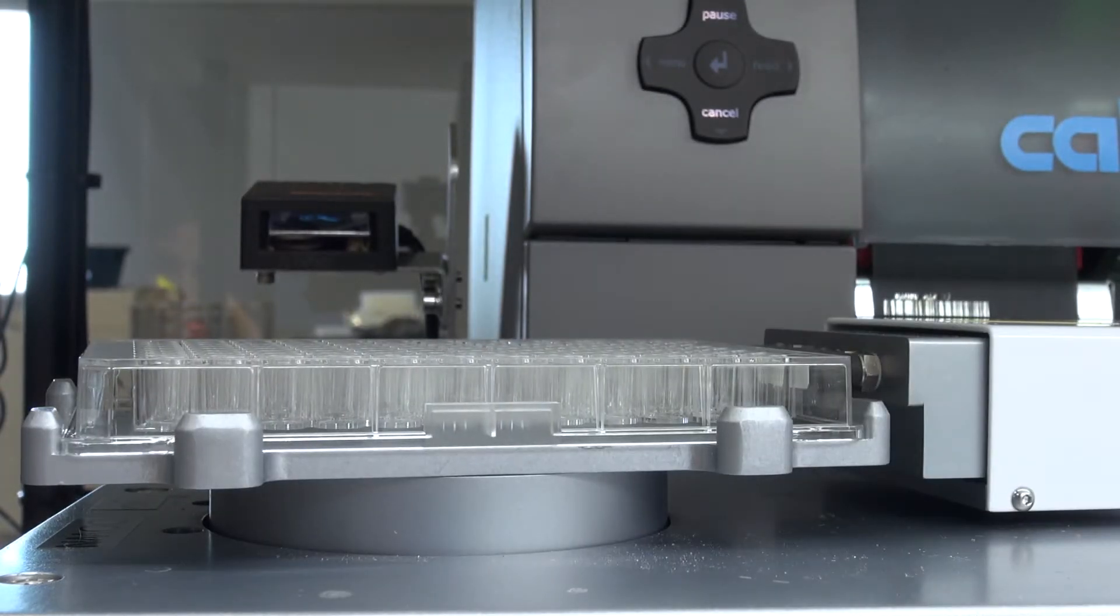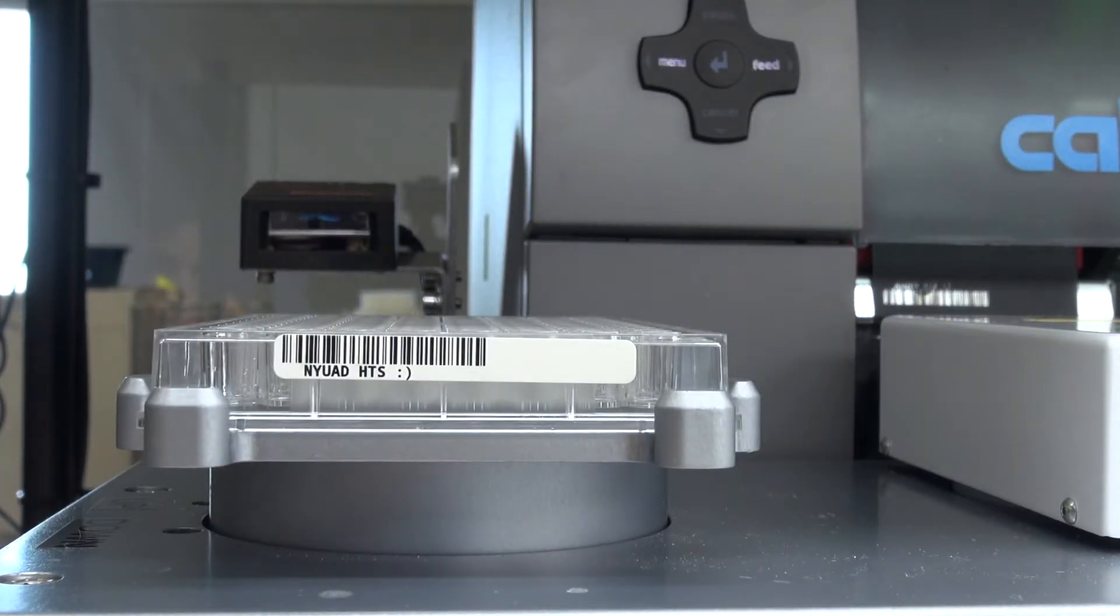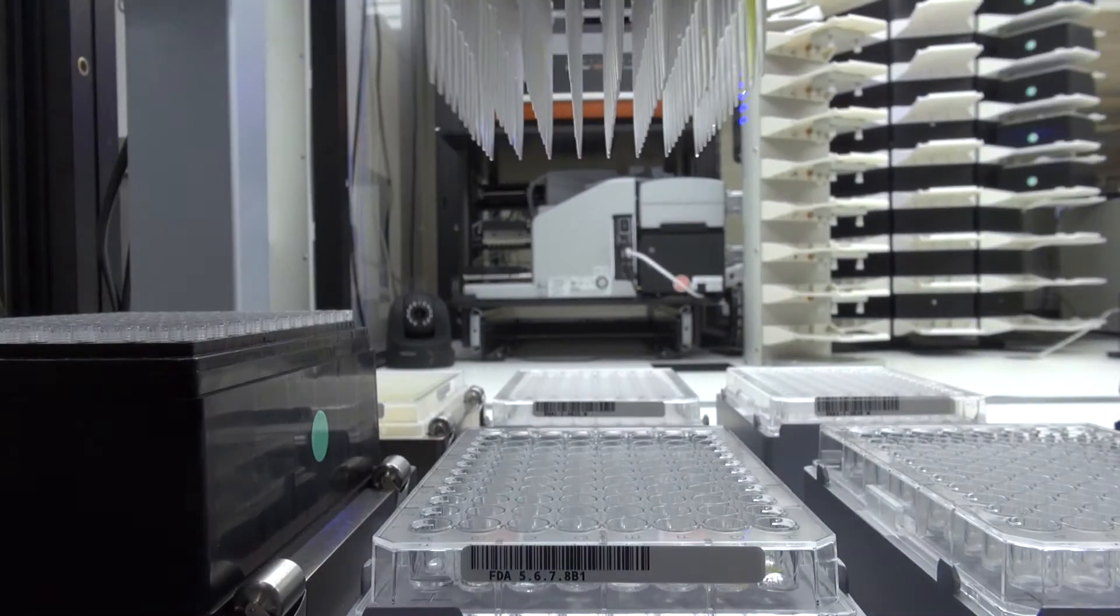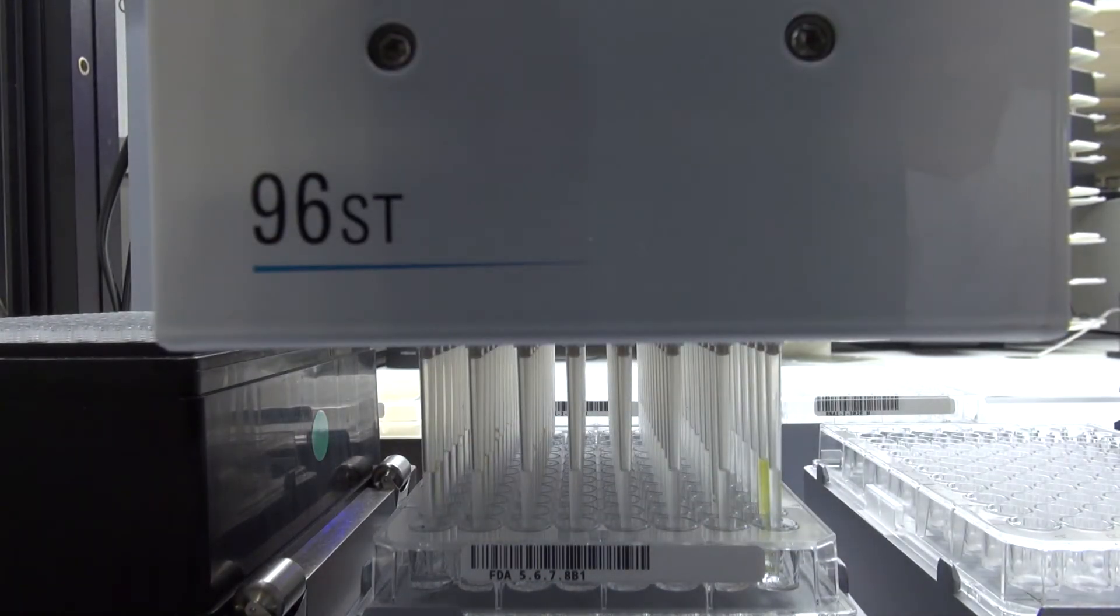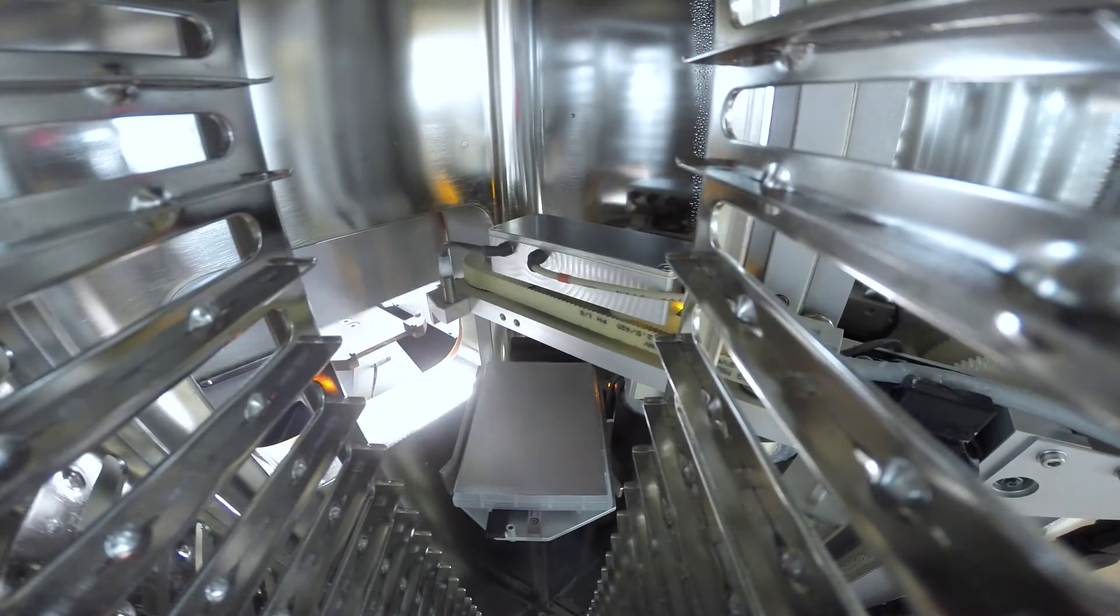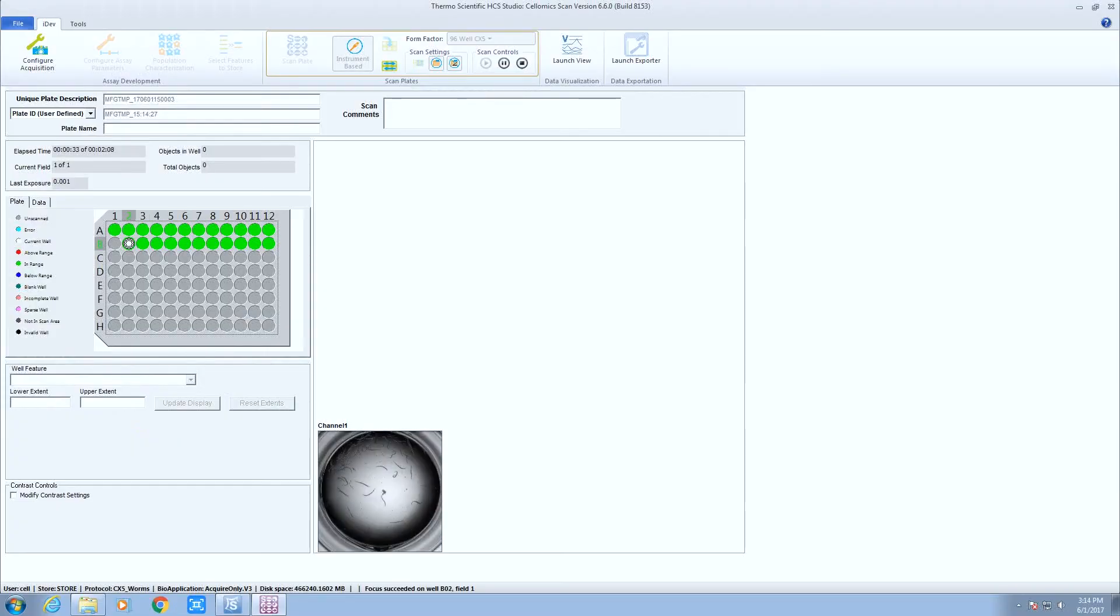Barcode labels are attached to track plates throughout each experiment. Liquid handlers dispense samples of chemicals and organisms into multi-well plates. Plates are incubated for hours or days at different temperatures and then imaged using an automated high-throughput array microscope.